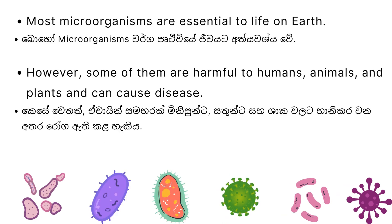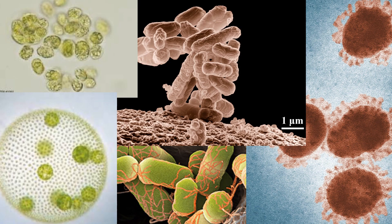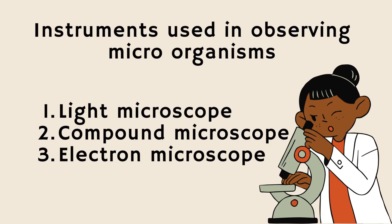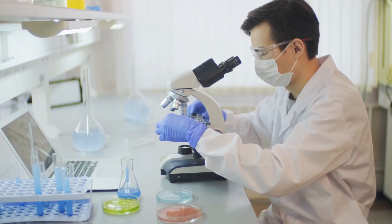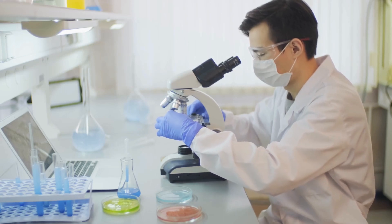Most microorganisms are essential to life on earth. However, some of them are harmful to humans, animals, and plants and can cause disease. Instruments used in observing microorganisms are the light microscope, compound microscope, and electron microscope.